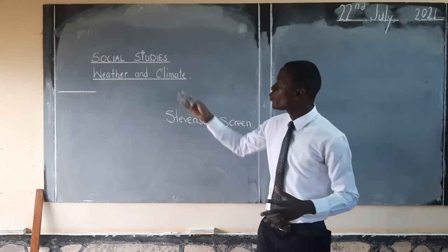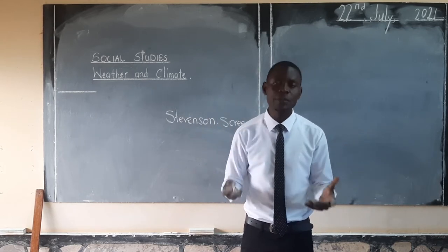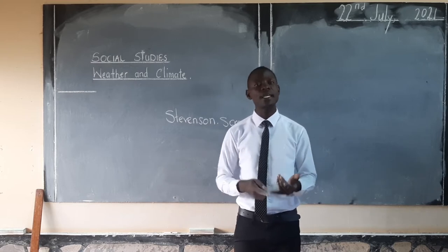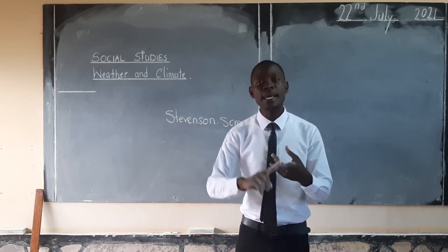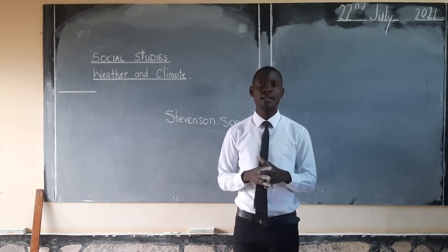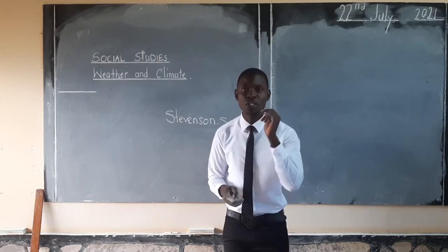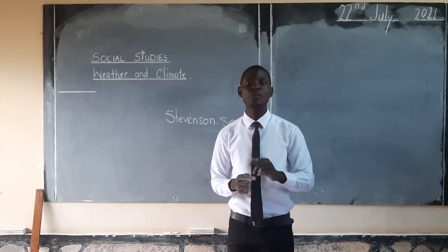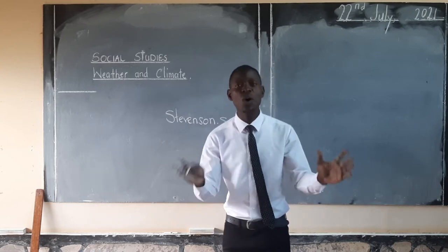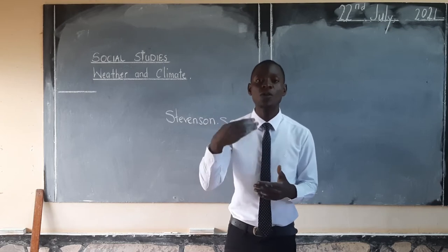Under weather, in the previous lesson, we said there are a good number of descriptions of weather. How can you describe weather? We say weather can be described as hot, cool, warm, sunny, cloudy, and windy, to mention but a few. I'm emphasizing on that because I remember in grade one and grade two, your teachers were asking you: what is the weather today? You were saying it's cold, it's cool, it's warm — just like that. All those words were under the descriptions of weather.